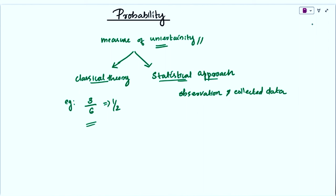Both theories have some serious difficulties. For instance, these theories cannot be applied to activities or experiments which have an infinite number of outcomes. These two theories are useful only for a finite number of outcomes, and we cannot use them for infinite number of activities or experiments. Hence, to define probability, we used 'likely' or 'equally probable' outcomes, which is logically not a correct definition.